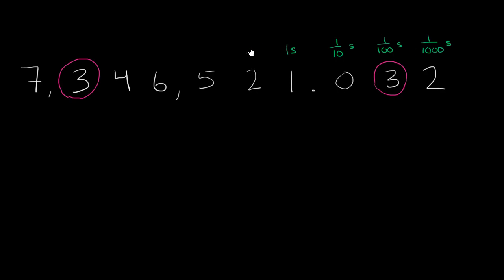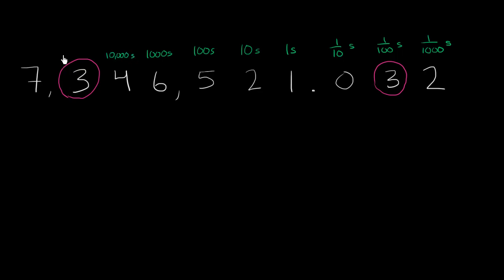Now, if we go to the left, each place represents a factor of 10 more. So this is ones multiplied by 10 — this is the tens place. This is the hundreds place. This is the thousands place. This is the ten thousands place. This is the hundred thousands place.